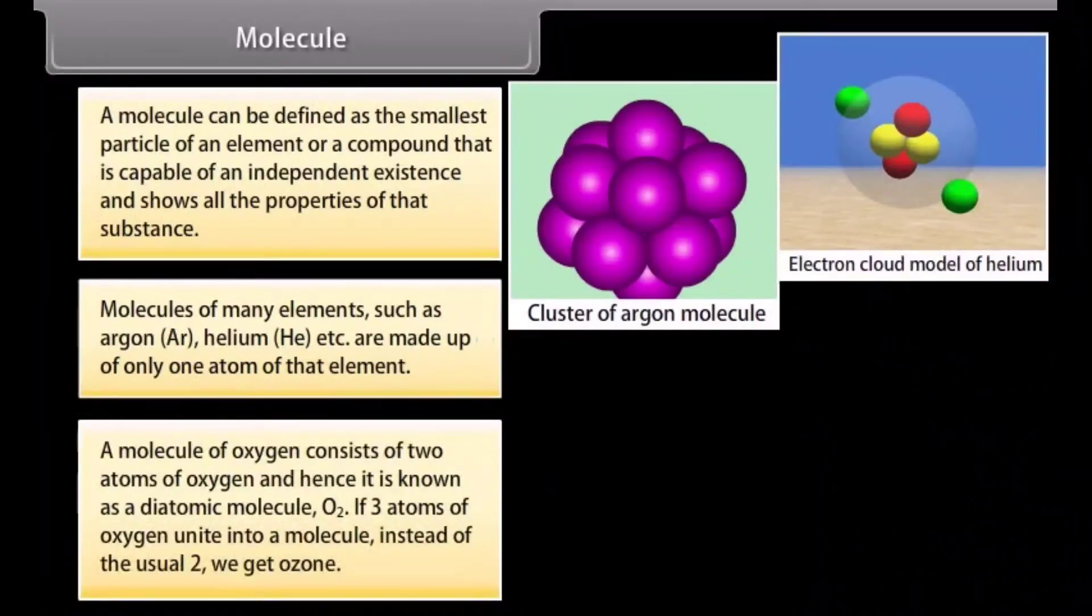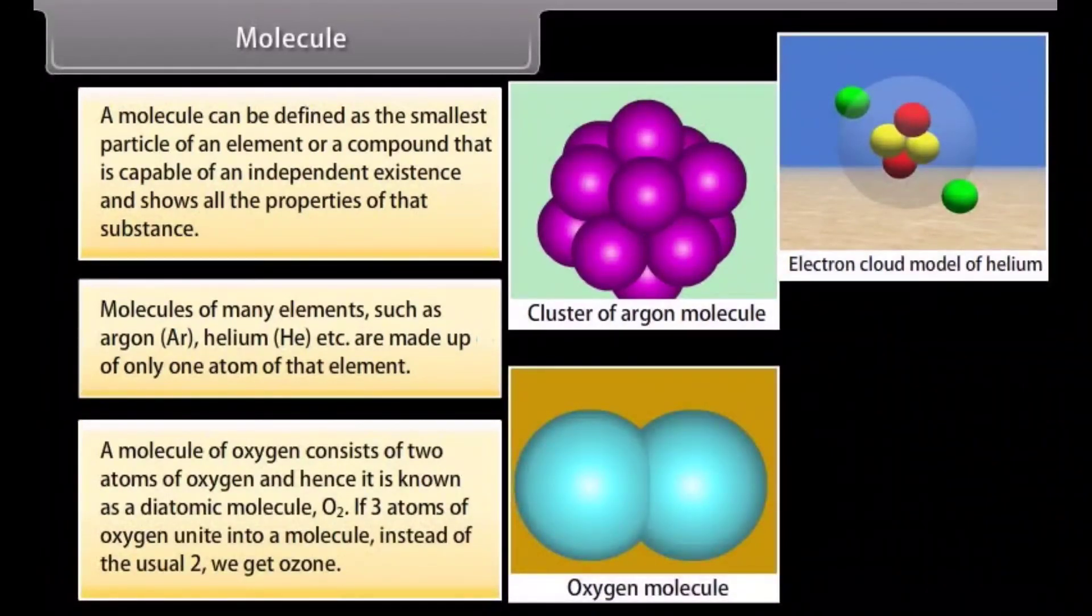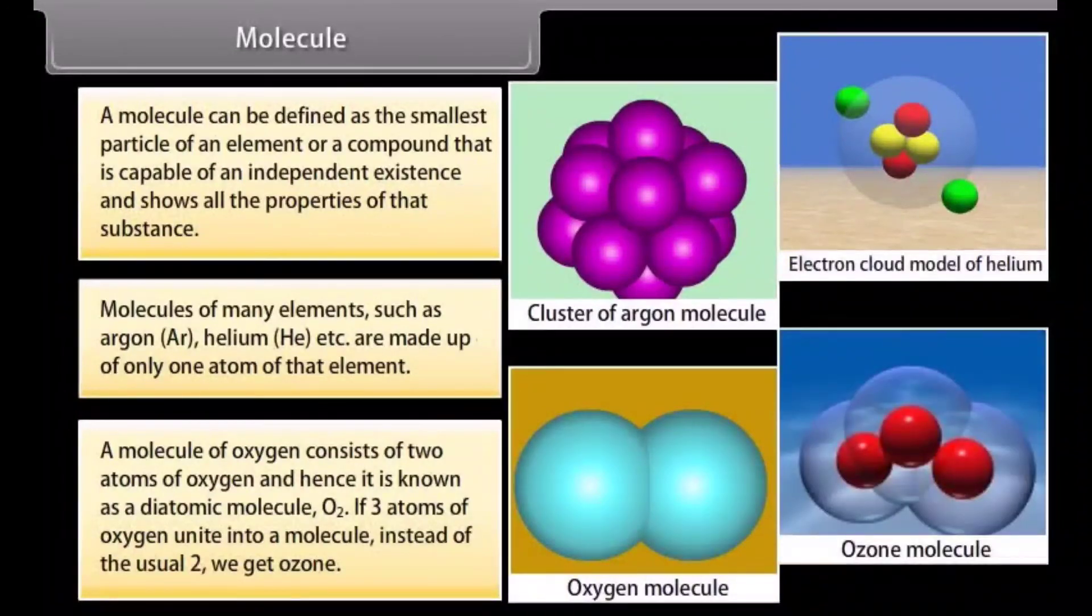A molecule of oxygen consists of two atoms of oxygen and hence it is known as a diatomic molecule, O2. If three atoms of oxygen unite into a molecule instead of the usual two, we get ozone.